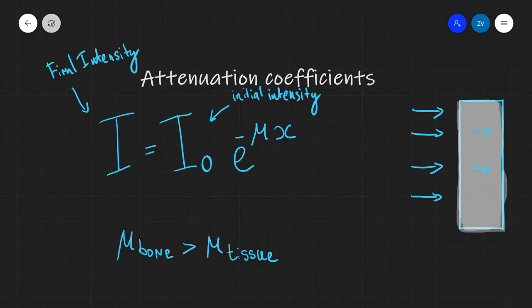Now the intensity decreases exponentially when we are going through a material. And this is dependent on what is known as the attenuation coefficient, which is this term of the equation here. It can also be known as the absorption coefficient of that substance.